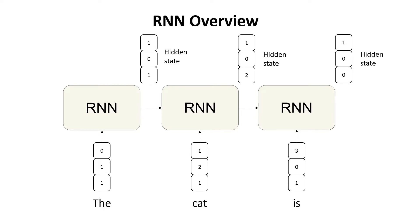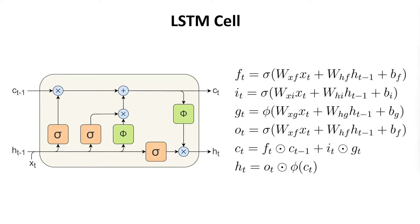This is how the internal architecture of the Long Short-Term Memory cell looks like, along with the equations that characterize it. It might look pretty overwhelming at first, but once you get your head around it they are pretty easy. Basically what we have inside the LSTM cell are three gates: the forget gate, the input gate, and the output gate. All these gates control the information flow from one step to the other in our sequence.